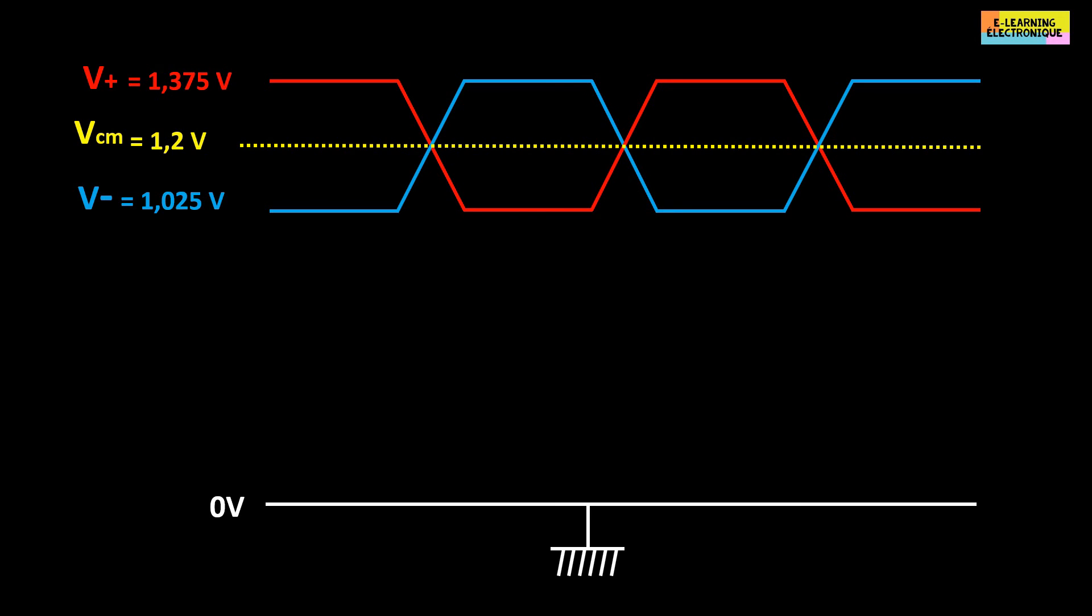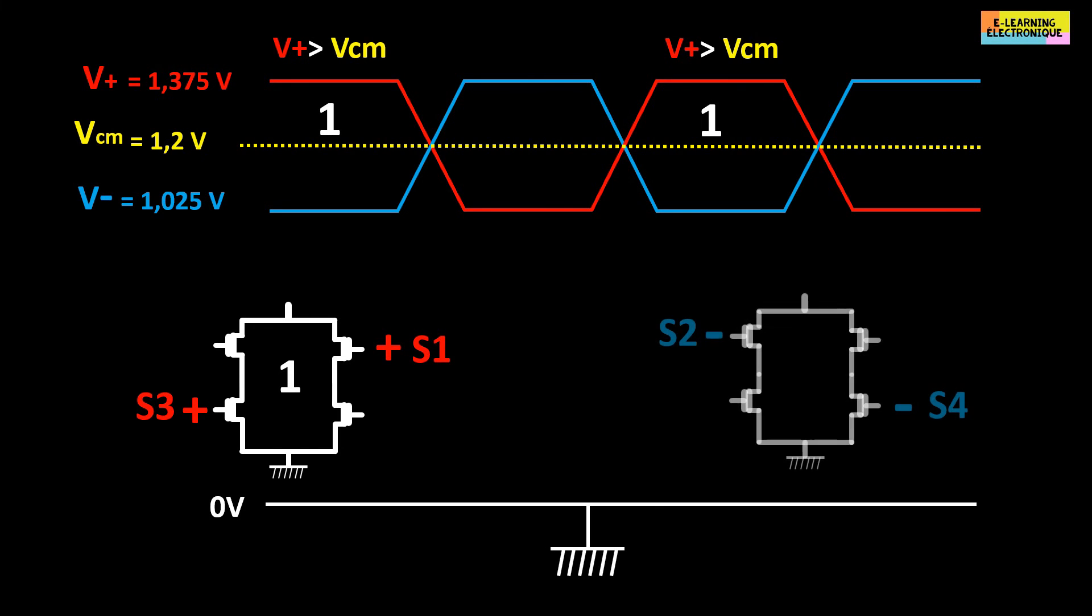If the input switches S1, S3 are closed, V+ is greater than VCM. The logic output will give a high level or 1. If at input S2, S4 are closed, V- is less than VCM. The logic output will give a low level or 0.